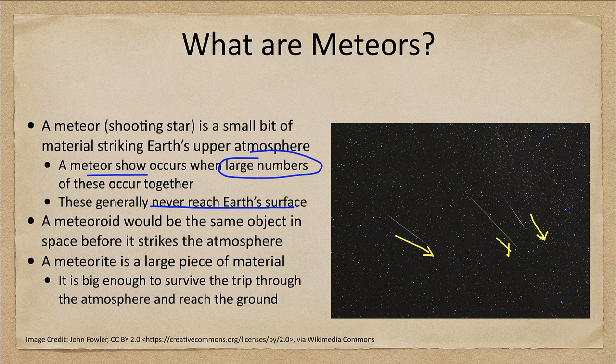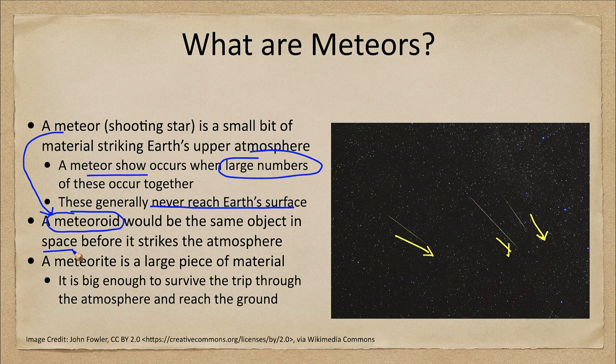A meteoroid, on the other hand, is this same object before it enters the atmosphere. A meteor came from a meteoroid — a meteoroid is just that same bit of material out in space. This would be a small grain of sand, a little flake of ice, some tiny bit of material. They strike Earth's atmosphere at extremely high speeds and vaporize, and that's what gives us a meteor.